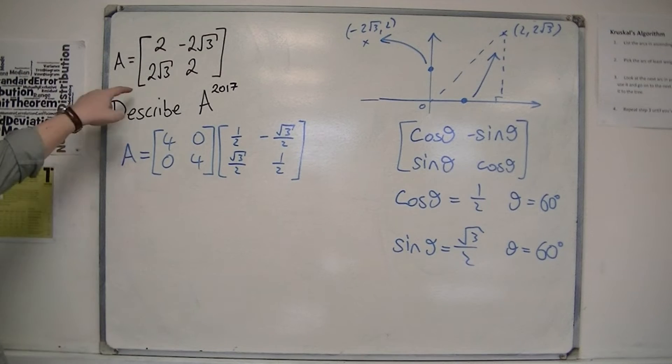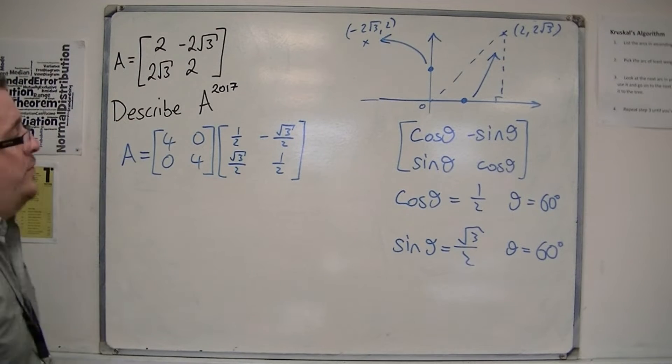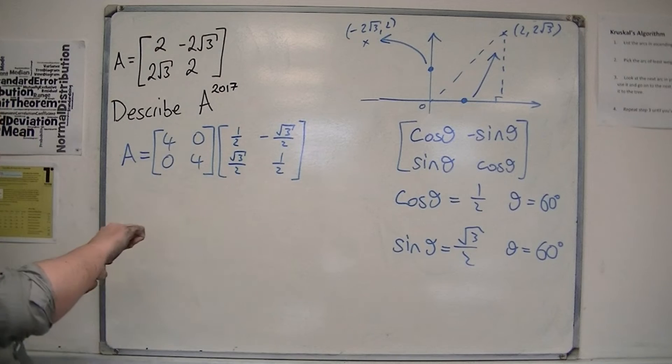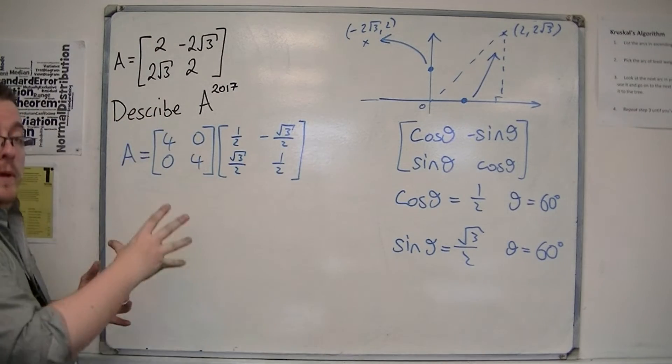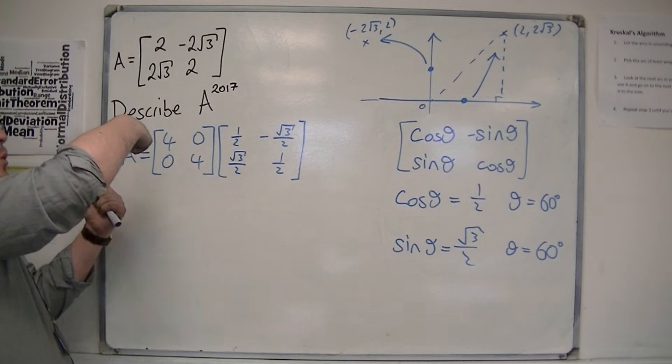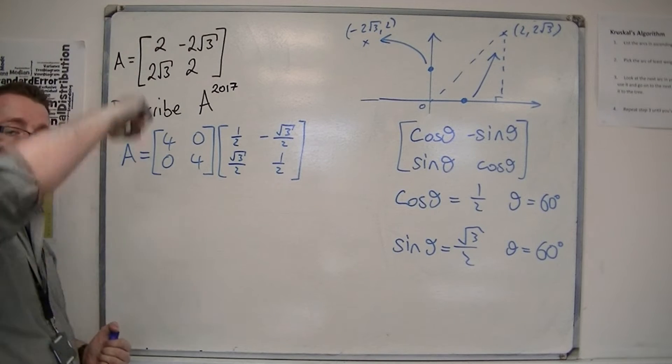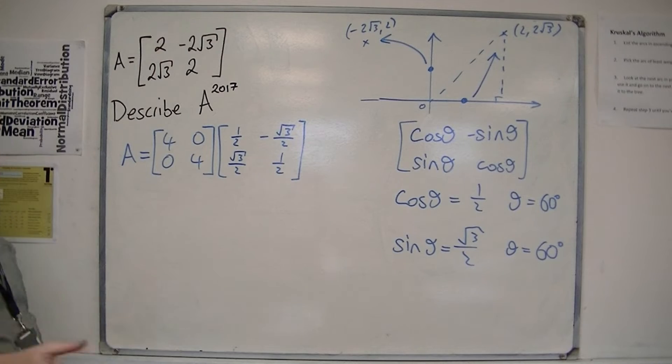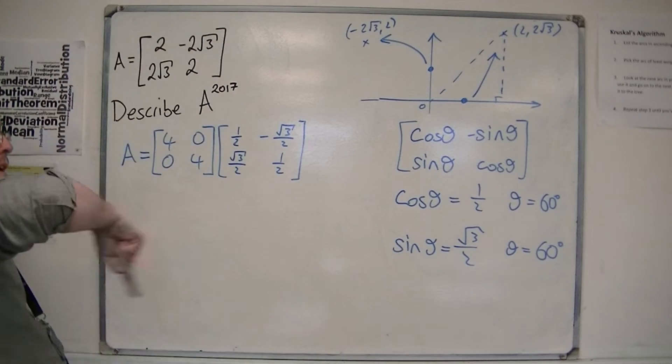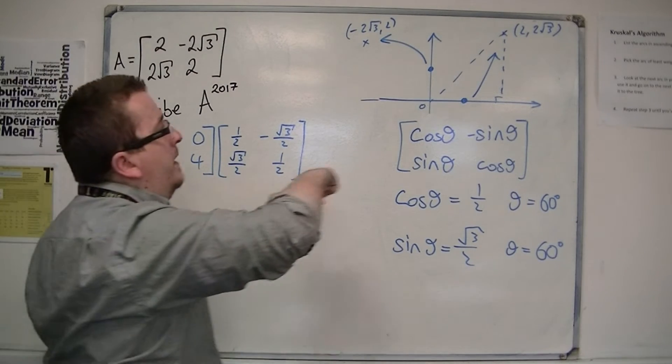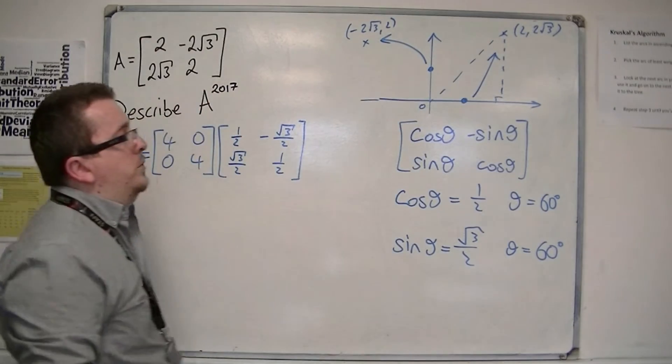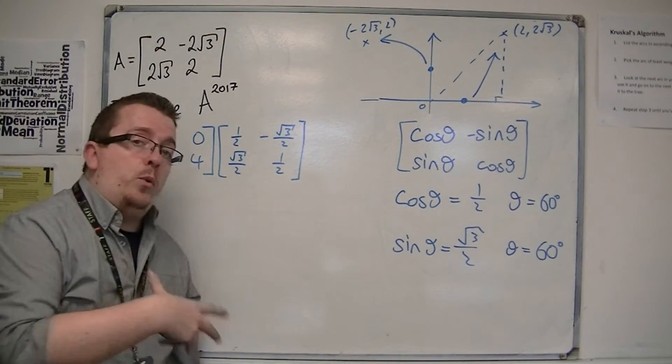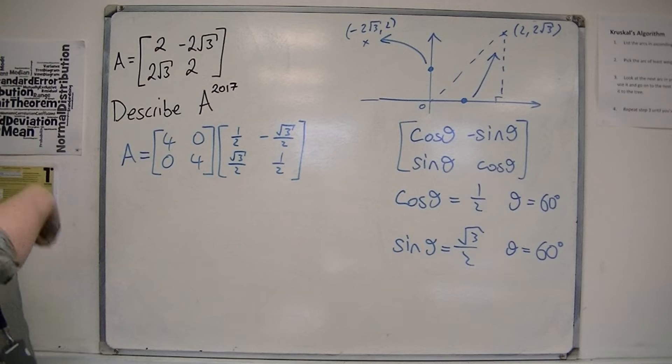So, if I now want to describe A to the 2017, what's going to be happening is that each time I apply this transformation, my points will get further and further away from the origin. But, they will keep rotating around the circle. And 60 degrees is quite a nice number for going around in a circle.